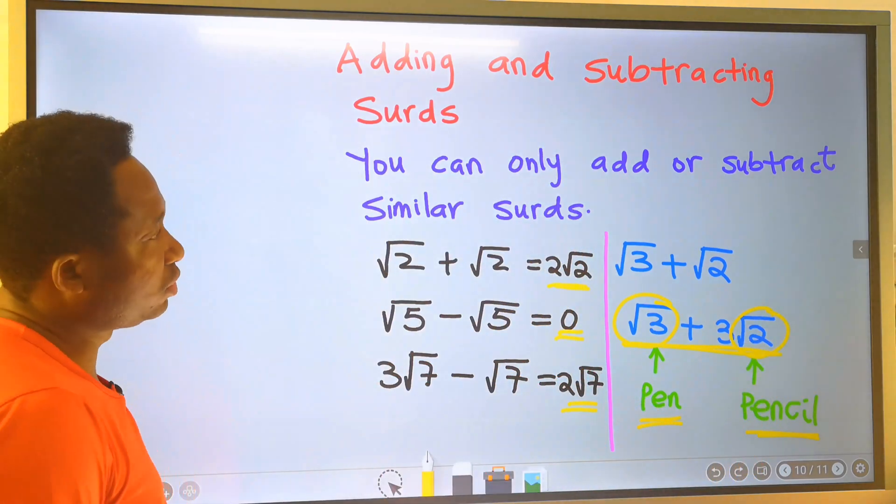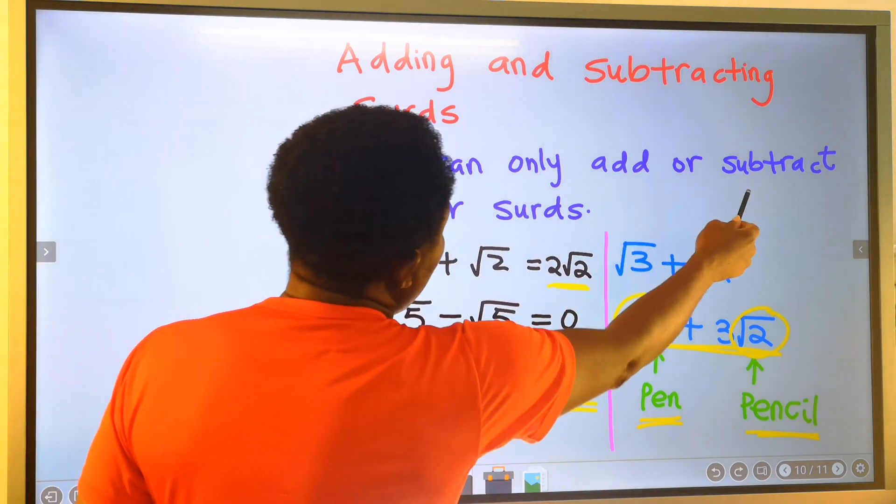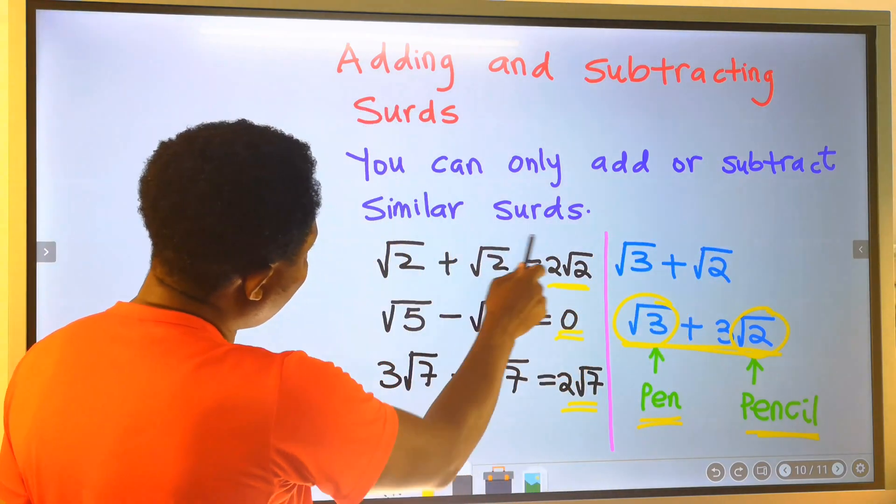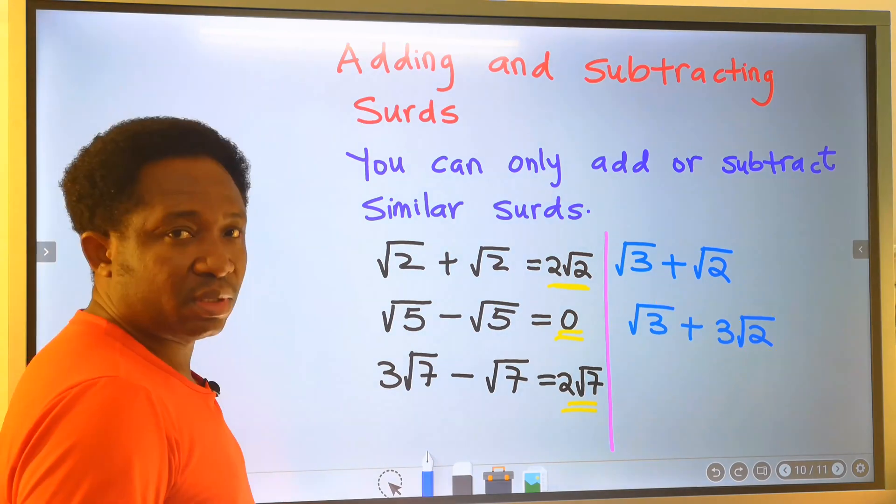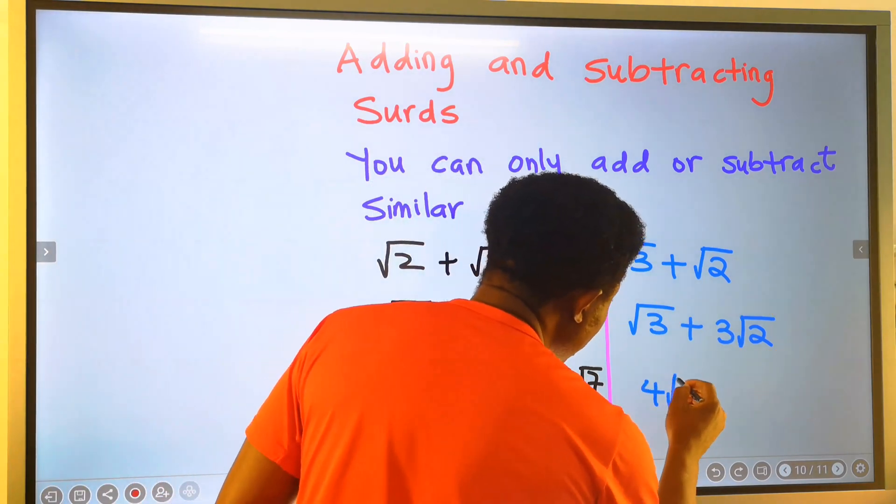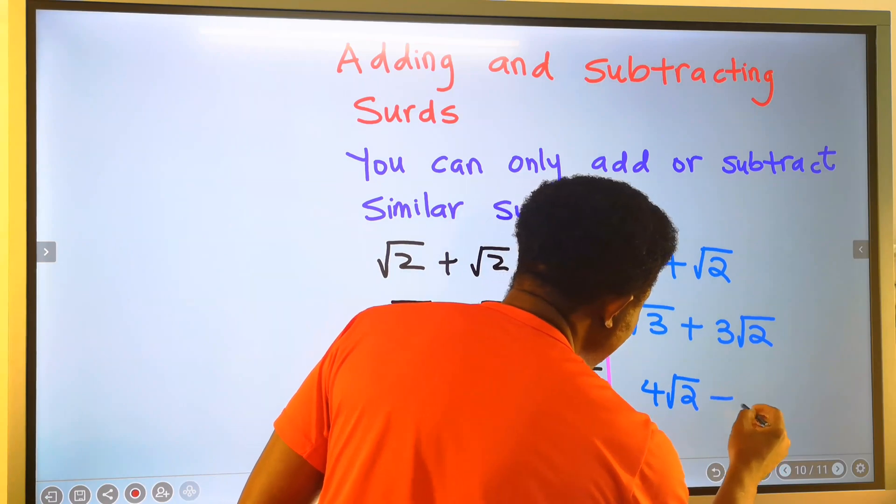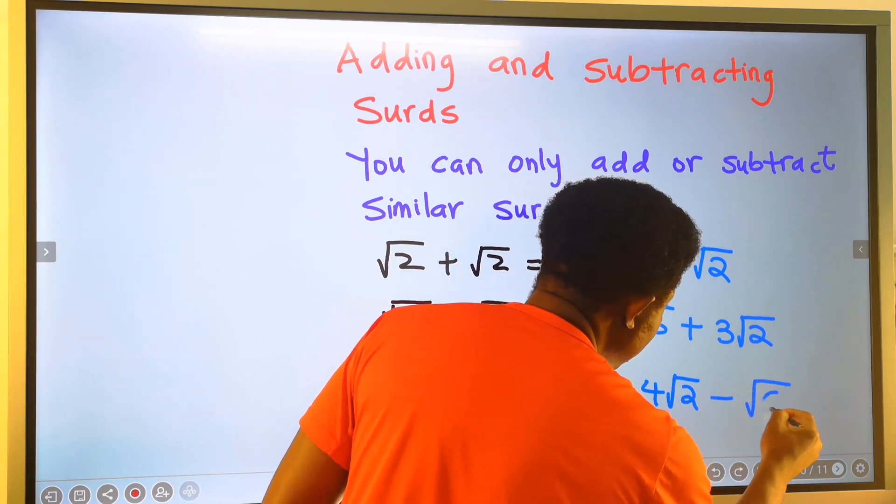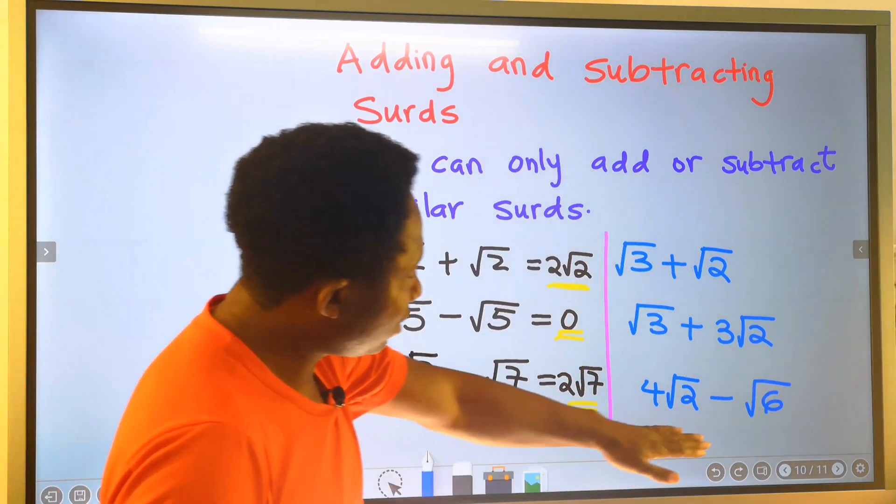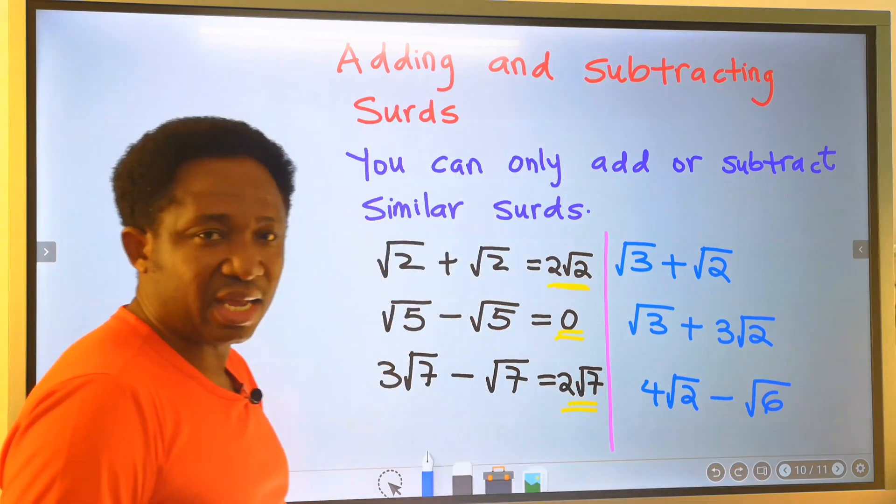Remember the rule: you can only add or subtract similar swords. If you have 4 root 2 minus root 6, this becomes a final answer.